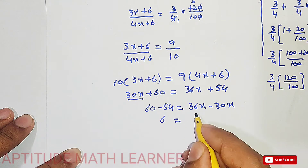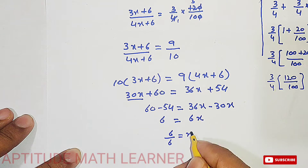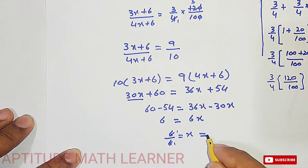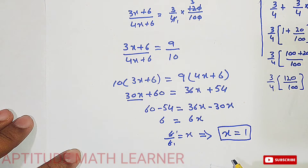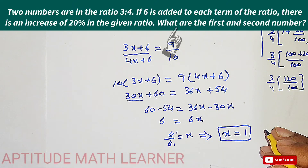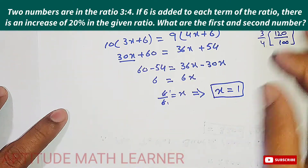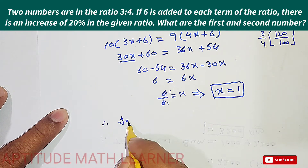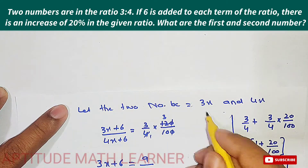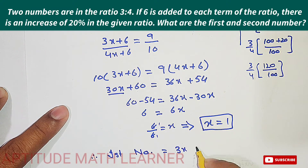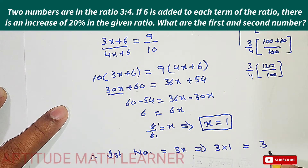This gives us 6 equals 6x, so 6 upon 6 equals x, meaning x equals 1. Now substituting back: the first number is 3x, which is 3 multiplied by 1, giving us 3 as the first number.